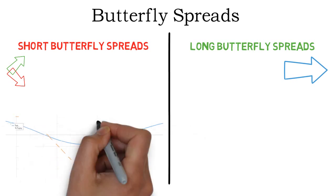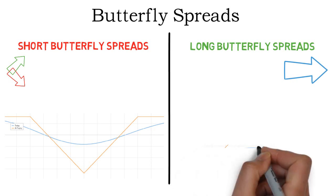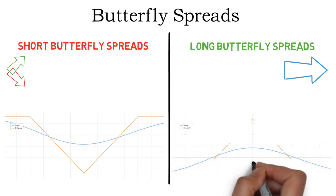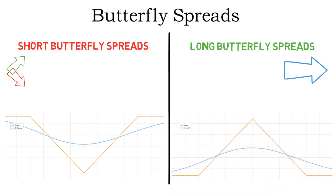This is how the payoff diagrams of the two different spreads look. A long butterfly spread is more or less just an inverted version of the short butterfly spread. The orange line shows the payoff profile on the expiration date whereas the blue line shows the payoff sometime before that. You should focus on the orange line as it is more significant.